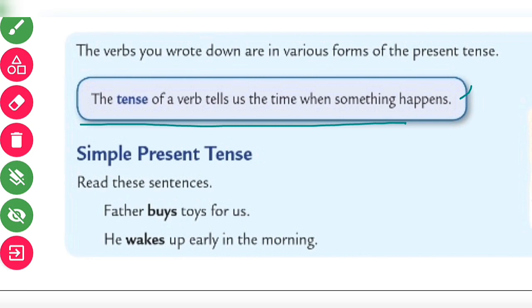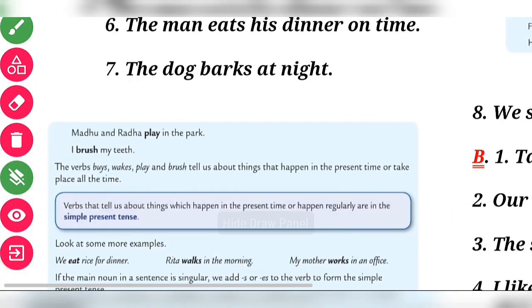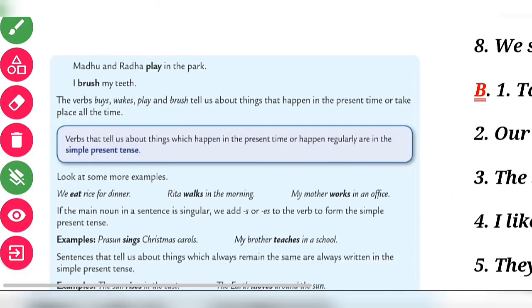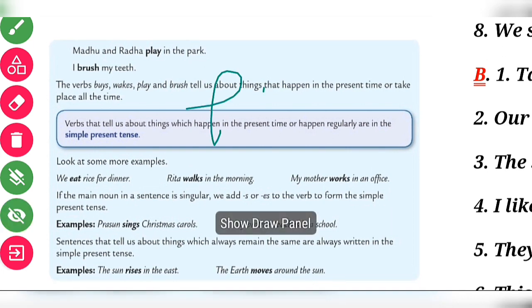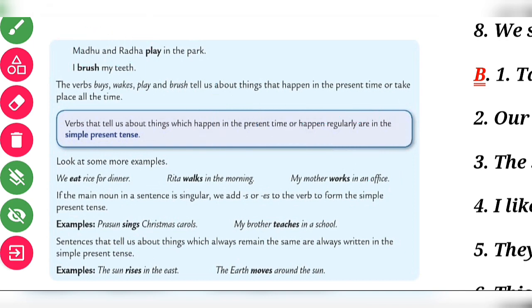First sentence, father buys - s is added. Why? Because father is singular. He wakes up early in the morning - s is added. Why? Because he is singular. Madhu and Radha play - here we have not used s, only play. Why? Because these two are plural subjects. I brushed my teeth, same verb.